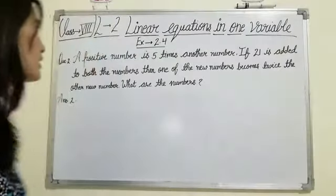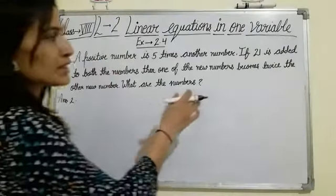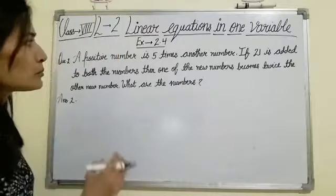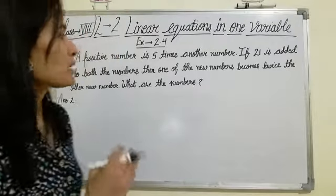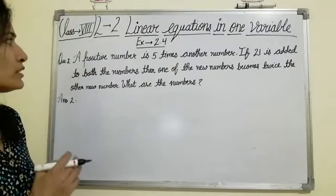Next question. A positive number is 5 times another number. If 21 is added to both the numbers, then one of the new numbers becomes twice the other new number. What are the numbers?